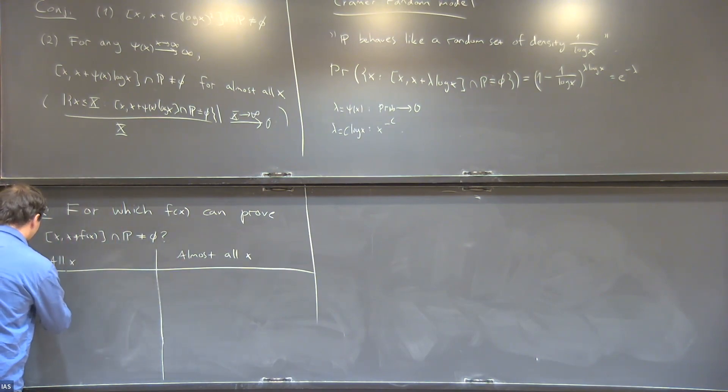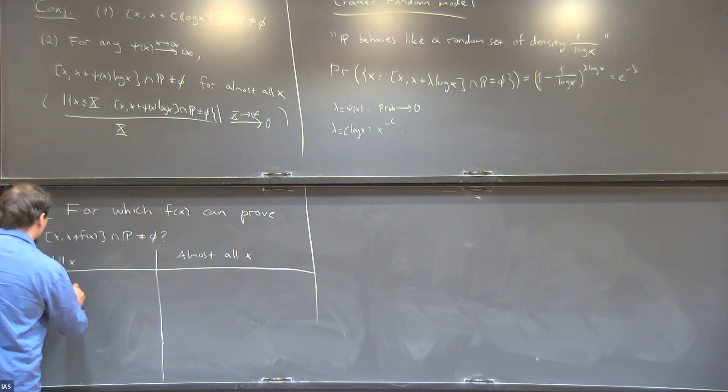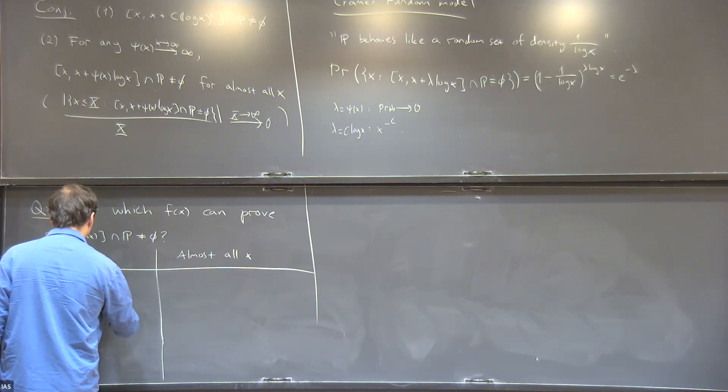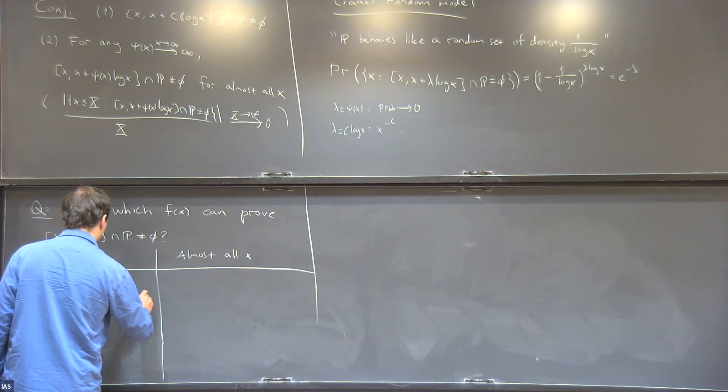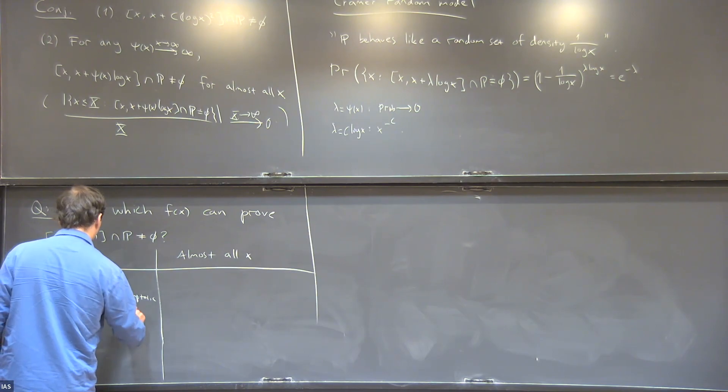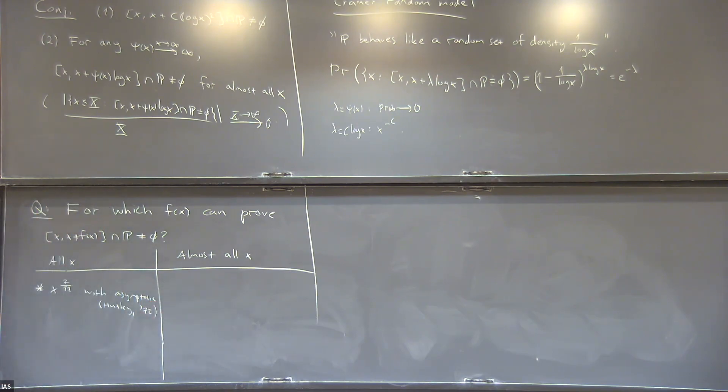For all X, we know that intervals of length X to the 7/12 contain primes, even with the correct asymptotic. This is a result of Huxley from 1972, with slight improvements usually attributed to Heath-Brown.